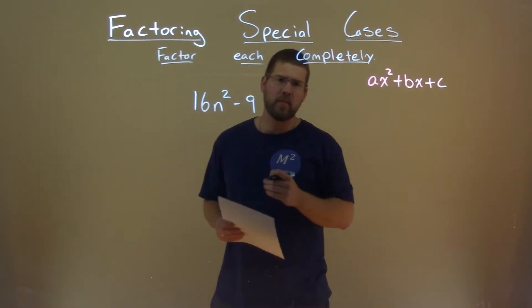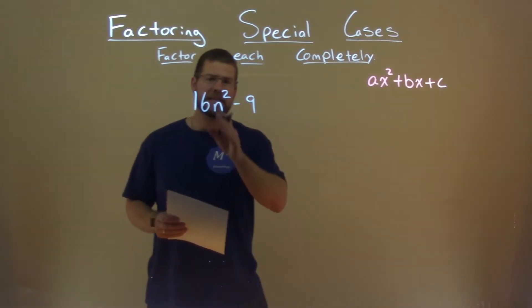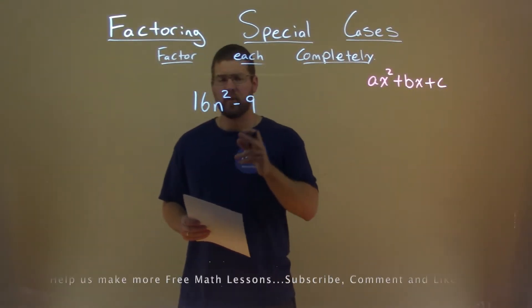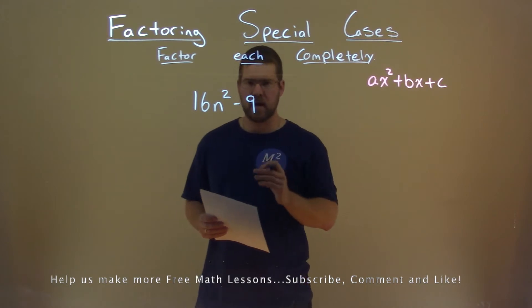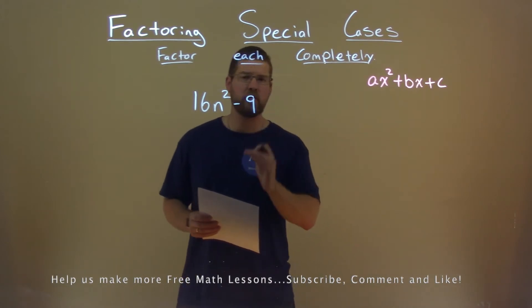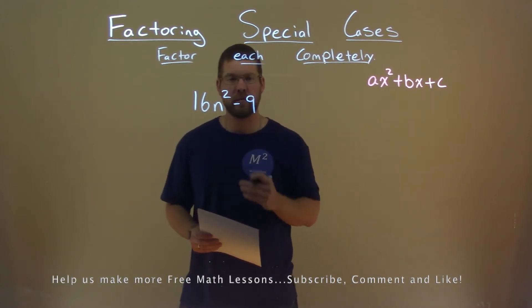We're given this problem right here: 16n squared minus 9, and we need to factor this completely.